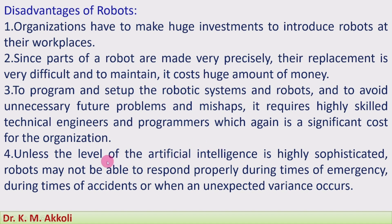Unless the level of artificial intelligence is highly sophisticated, robots may not be able to respond properly during times of emergency, during accidents, or when unexpected variance occurs. This can be called a malfunctioning of the systems — sometimes, as per our requirement, they may not function, and variations will be there. During that time it will not respond and will not do the expected work. That is one disadvantage associated with robots.